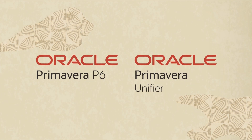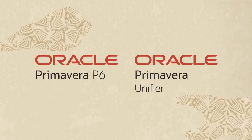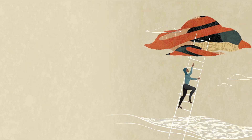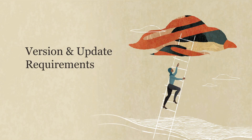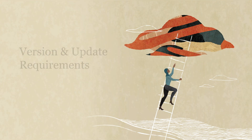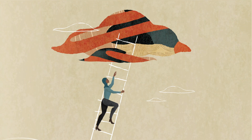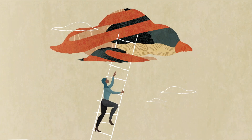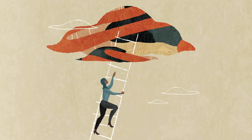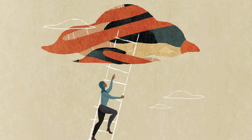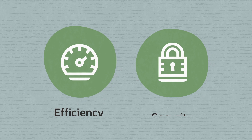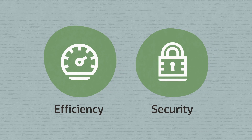Welcome to the Oracle Primavera P6 and Unifier video series. Today we're going to talk about the version and update requirements for all P6 and Unifier customers. Since both P6 and Unifier are hosted in our Oracle Cloud Infrastructure, or OCI data center, it's important to stay current and up-to-date. By staying up-to-date, you're engaging Primavera Cloud solutions in the most efficient and secure way.